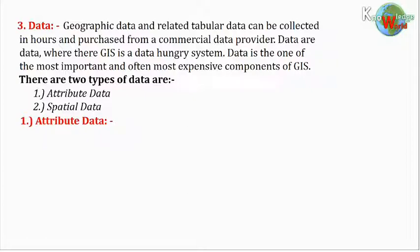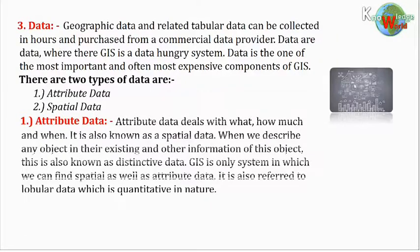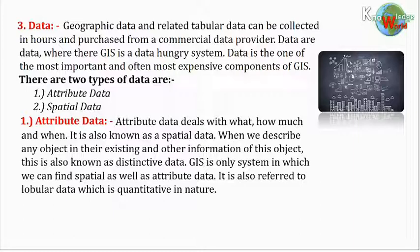Attribute data. Attribute data deals with what, how much, and when. It is also known as non-spatial data. When we describe any object and other information about that object, this is also known as descriptive data. GIS is the only system in which we can find spatial as well as attribute data. It is also referred to as tabular data, which is quantitative in nature.